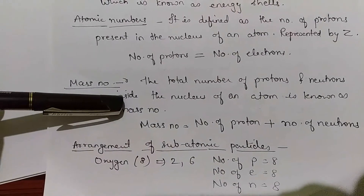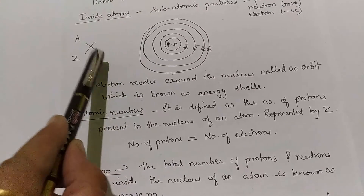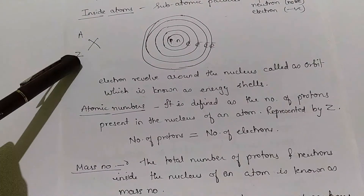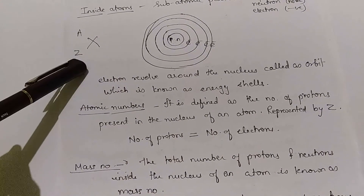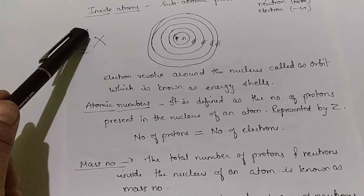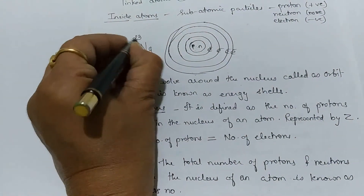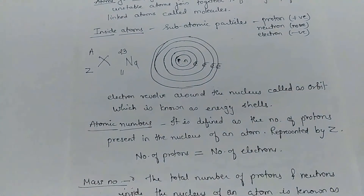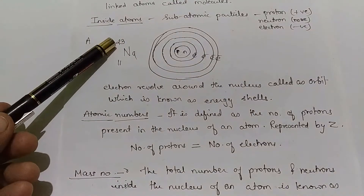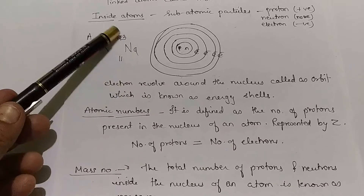Atomic number is represented by Z and mass number is represented by A. To express any element symbolically, suppose X is that element: its mass number A is written as a superscript (upside) and atomic number Z is written as a subscript (downside). For example, sodium is written with 23 upside (mass number) and 11 downside (atomic number). With this notation we can easily find the number of protons, electrons, and neutrons.